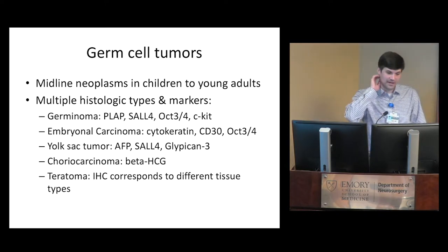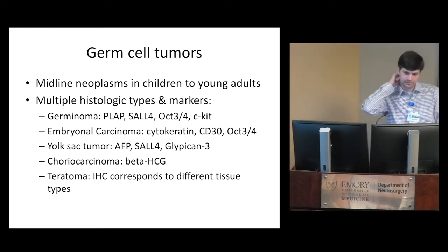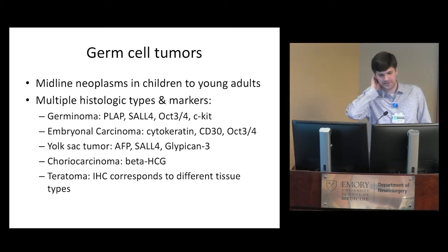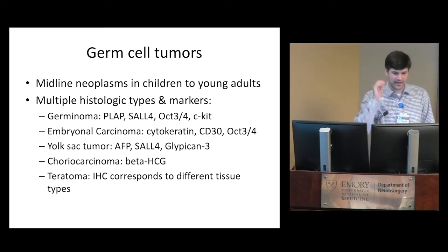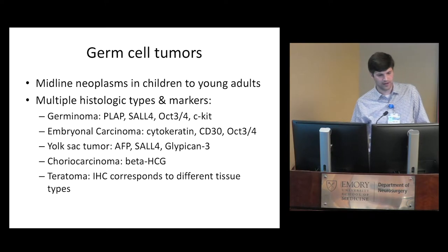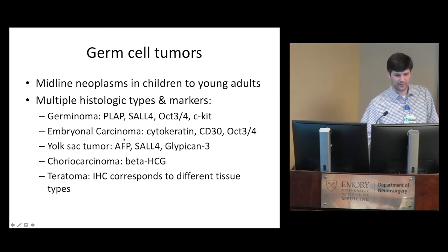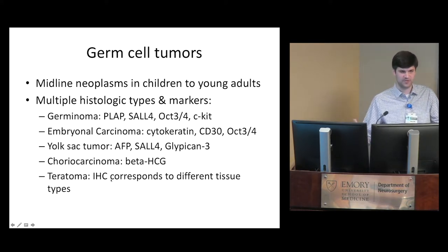Germ cell tumors are seen along the midline, often in kids and young adults, with multiple histologic types. The same tumor as a testicular seminoma or ovarian dysgerminoma, when in the CNS, is called a germinoma — defined by PLAP, SAL4, OCT3/4, and C-KIT positivity. Embryonal carcinomas are positive for cytokeratins, CD30, and OCT3/4. Yolk sac tumors produce AFP — alpha-fetoprotein. Choriocarcinomas produce beta-HCG and are beta-HCG positive by immunohistochemistry. Teratomas contain combinations of ectoderm, endoderm, and mesoderm all mashed together.